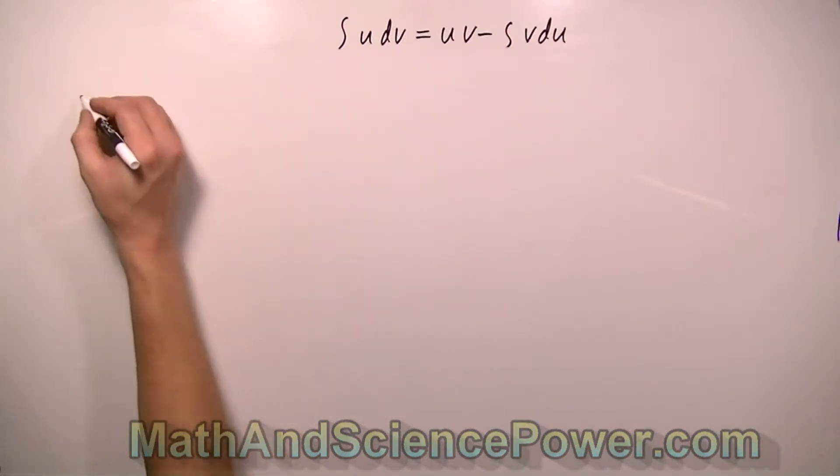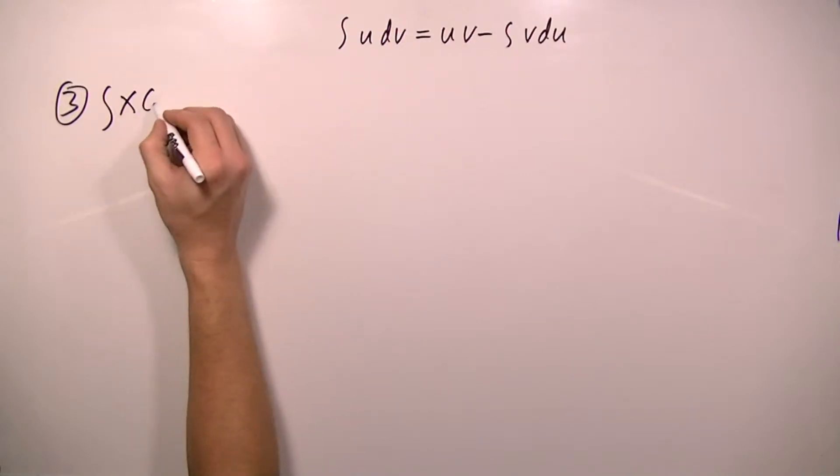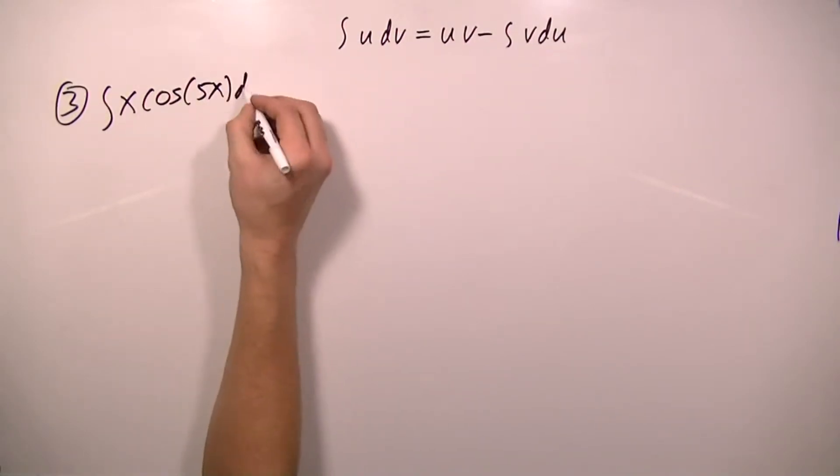Okay, we're doing integration by parts. And number 3 asks us to find the integral of x cos 5x dx.